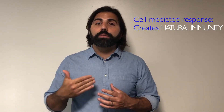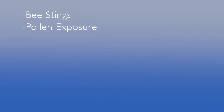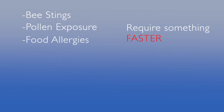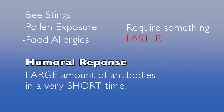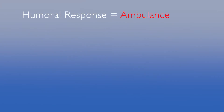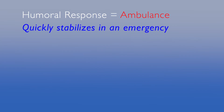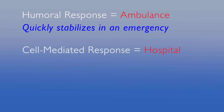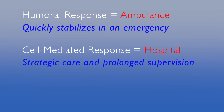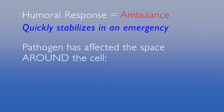Natural immunity is acquired through the cell-mediated response. Our immune system has one other reaction to pathogens: the humoral response. Situations such as bee stings, pollen exposure, and food allergies require something faster. This allergic-centered response creates a large number of non-specific antibodies in a very short time. One way to think about the difference between a cell-mediated response and a humoral response is to compare an ambulance to a hospital. The humoral response is like an ambulance — designed to quickly stabilize someone in an emergency, usually in desperate situations. The cell-mediated response is like a hospital, designed for strategic care and prolonged supervision. With most allergic events, the pathogen has not infected the cells yet, but the space around the cell. This is called an extracellular infection.